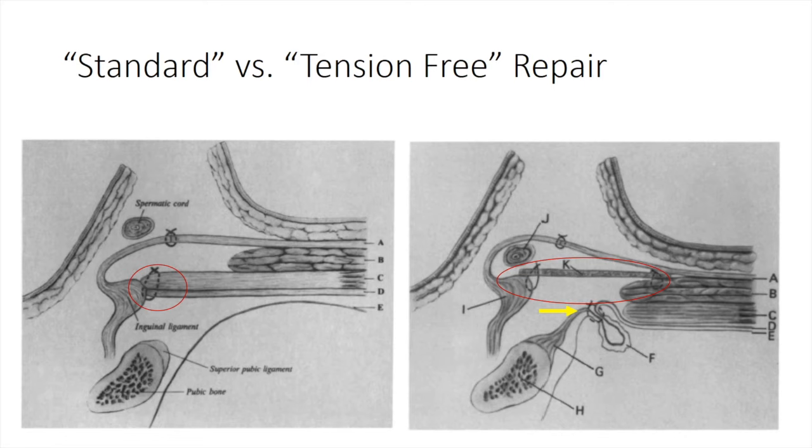Similar to other approaches, the inguinal canal is explored and the spermatic cord structures are separated from excess lipomatous tissue and the hernia sac, if present, is reduced. The hernia sac is then invaginated and occasionally requires a suture to keep in place, as indicated by the yellow arrow.